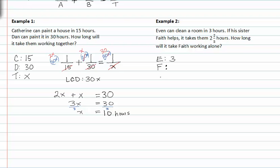So in this case they give them the together work time. So we know that together it's two and two-fifths hours, but we don't know how long it would take Faith. So two and two-fifths is the same as twelve-fifths.